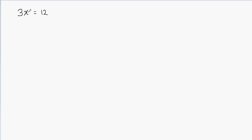Here, x is multiplied by 3. The opposite of multiplication is division, so we're going to divide both sides by 3 to isolate x. The 3s cancel out because 3 divided by 3 equals 1, and 1 times x is still x. On the right-hand side, 12 divided by 3 gives me 4. So x is equal to 4.